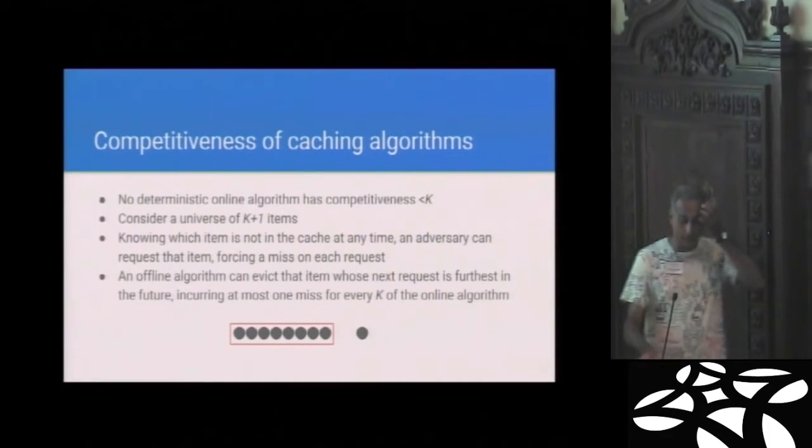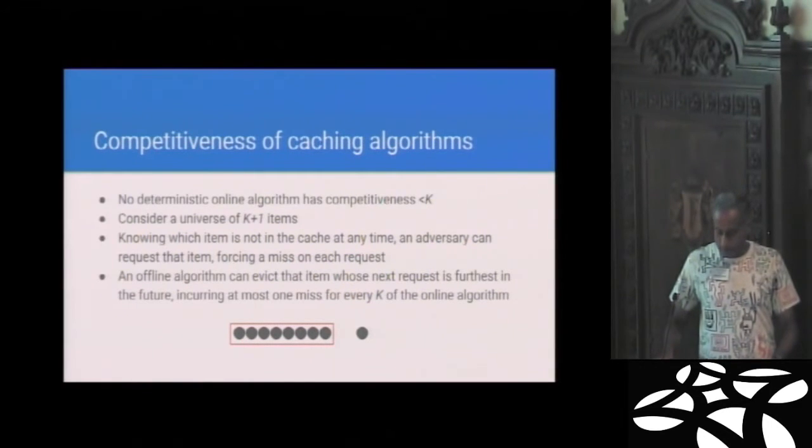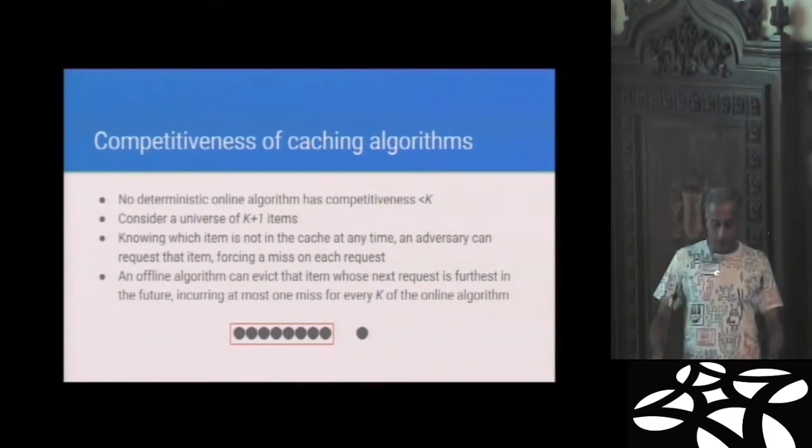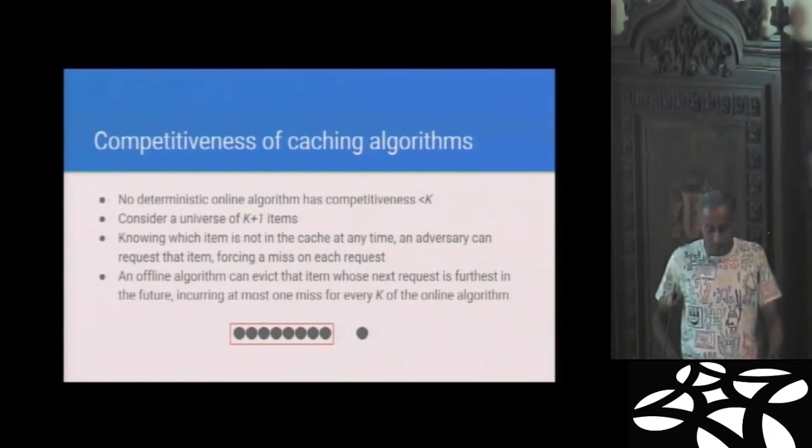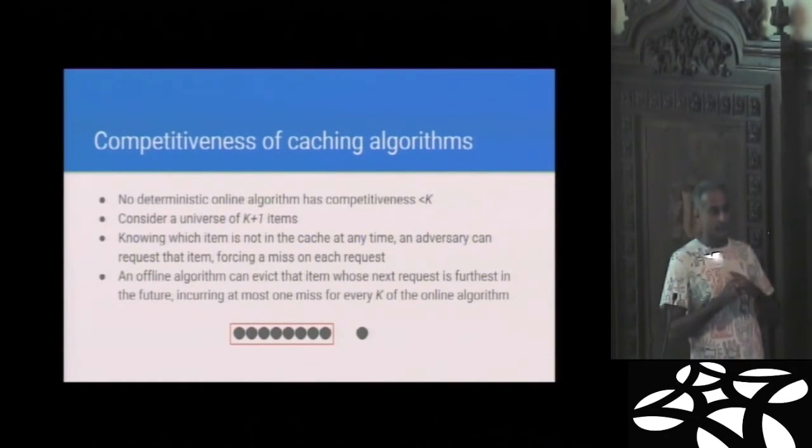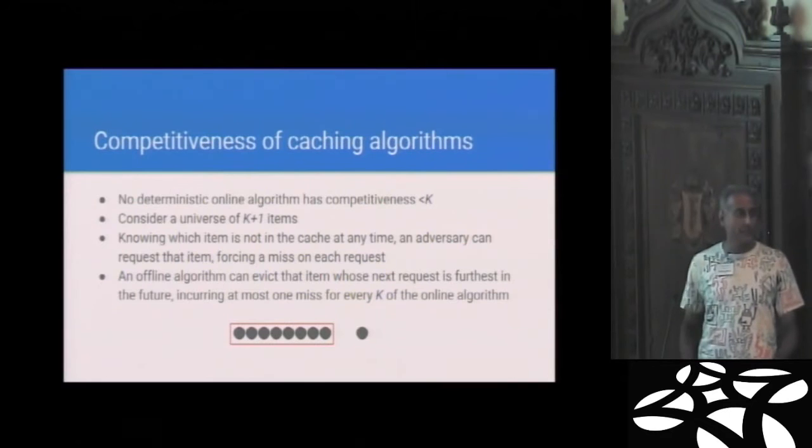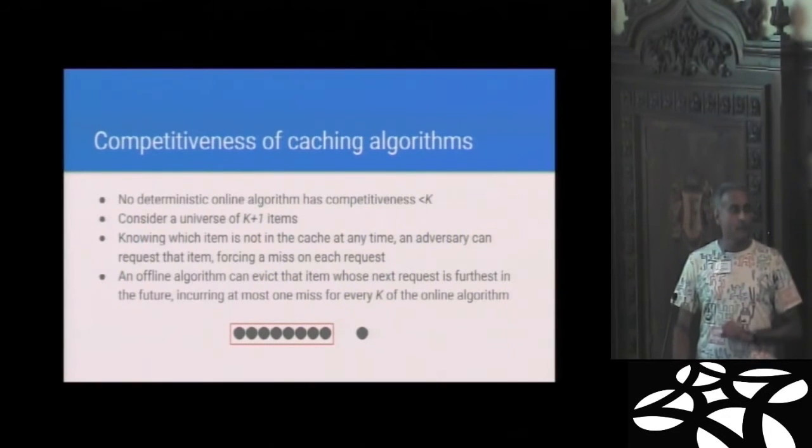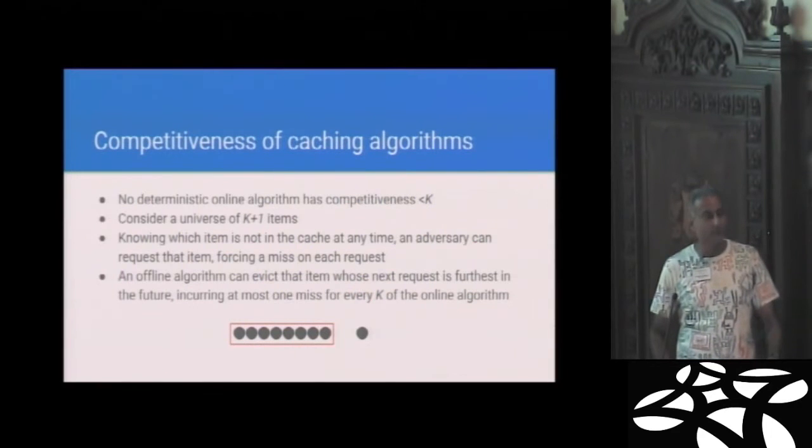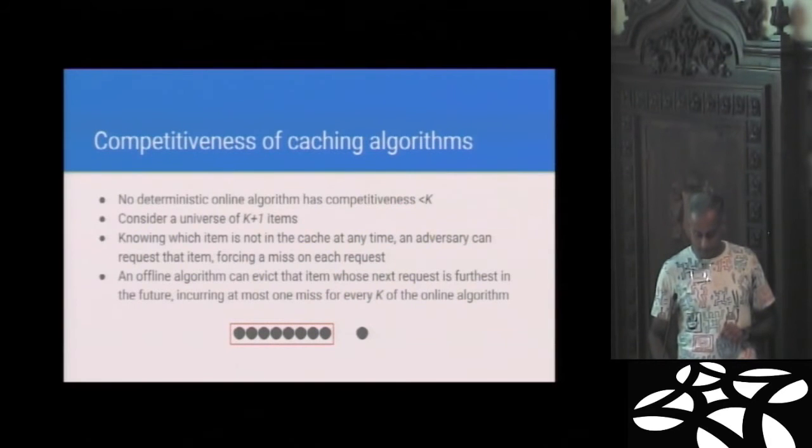What we're going to do is compare the rate at which an online algorithm misses to that of the best prescient offline algorithm, one who has infinite computing power, one who sees the entire future. And no matter what the sequences can write down the optimal sequence of evictions. And so we call that the competitiveness of A. So the thing you can easily show is that no deterministic online algorithm can beat competitiveness K. And the way you do that is just to have K plus one items and always request the item that the deterministic algorithm, caching algorithm has left out of cache. So it's hit him where he ain't. And by always requesting that, you can force the online algorithm to always miss.